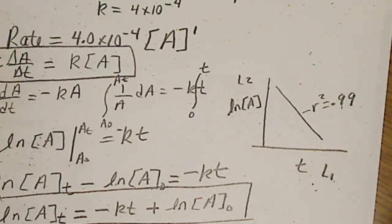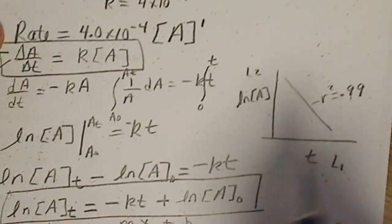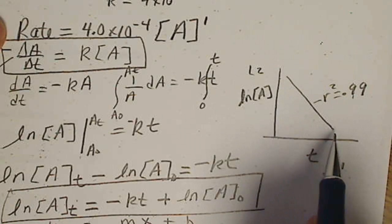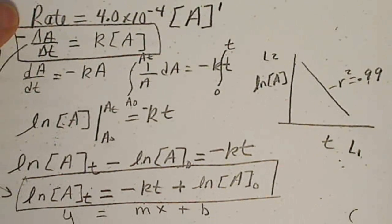That would tell us that this data is first order. So first order data will give us this graph. And this graph means we have first order data.